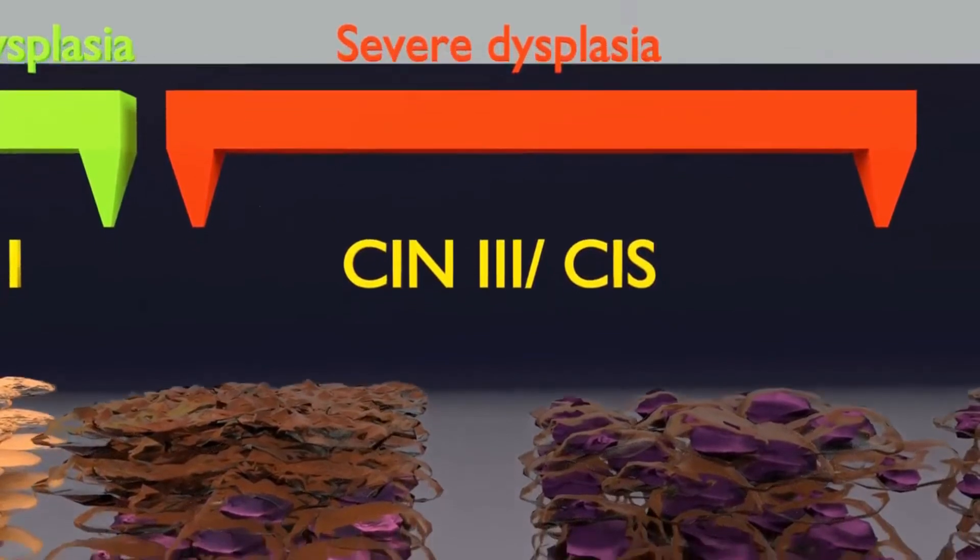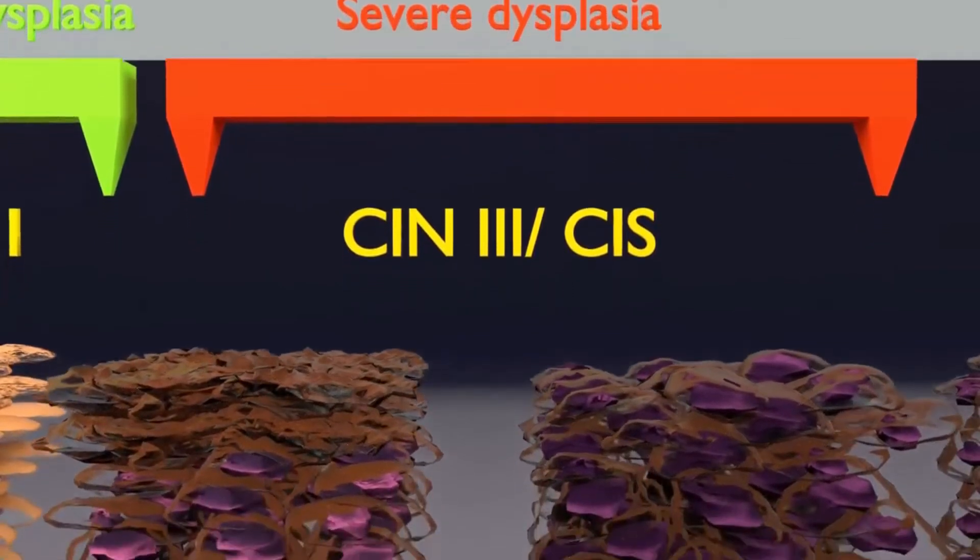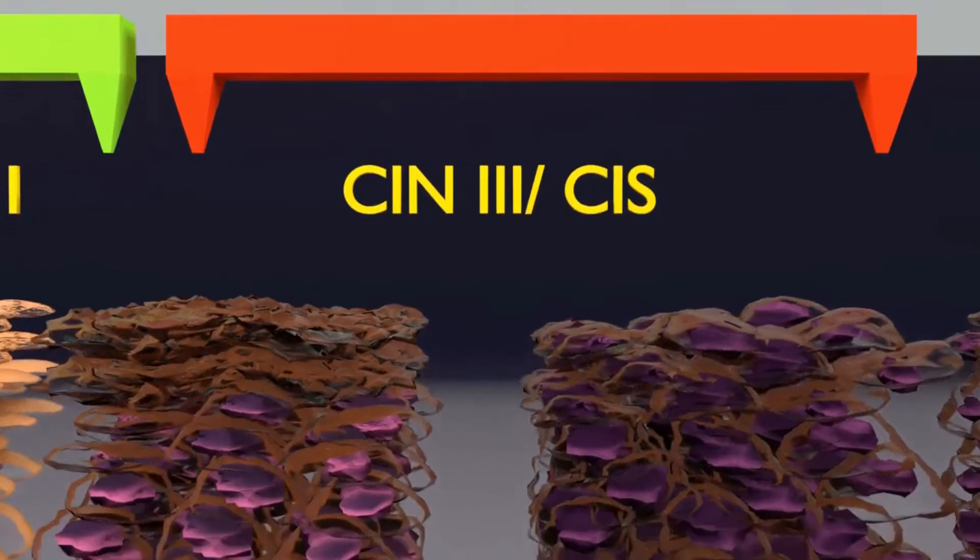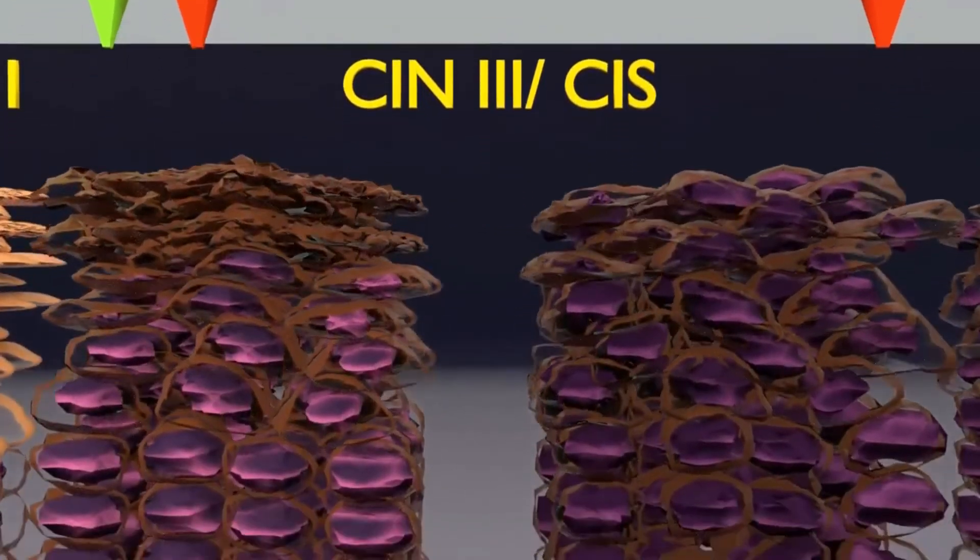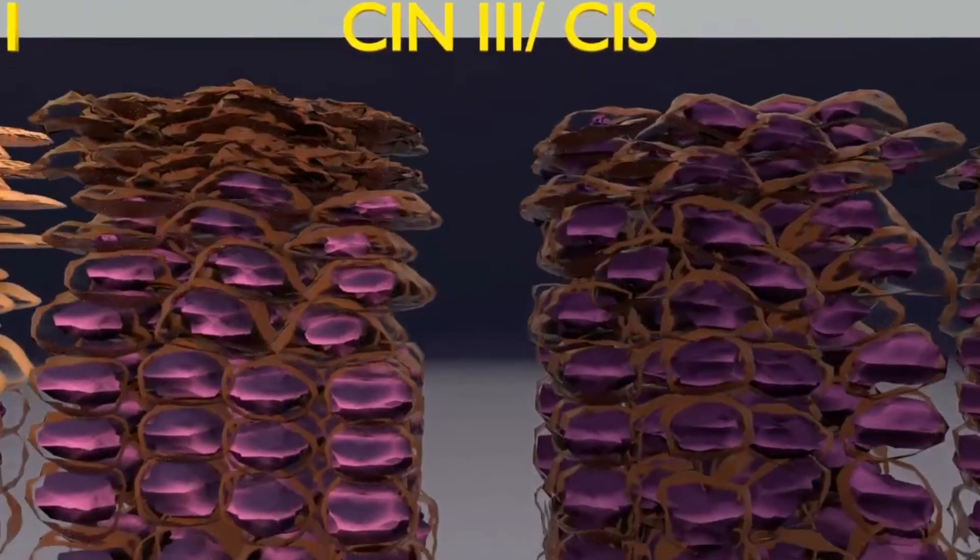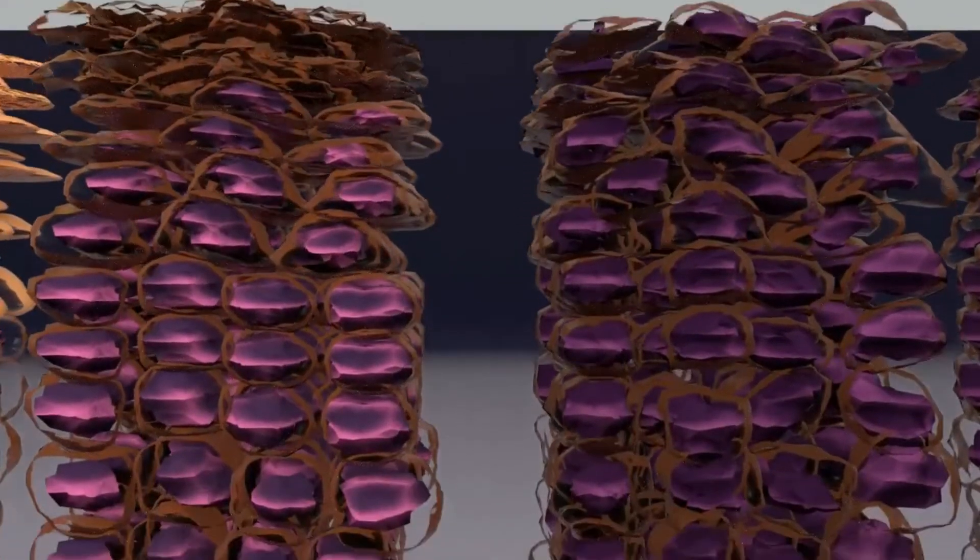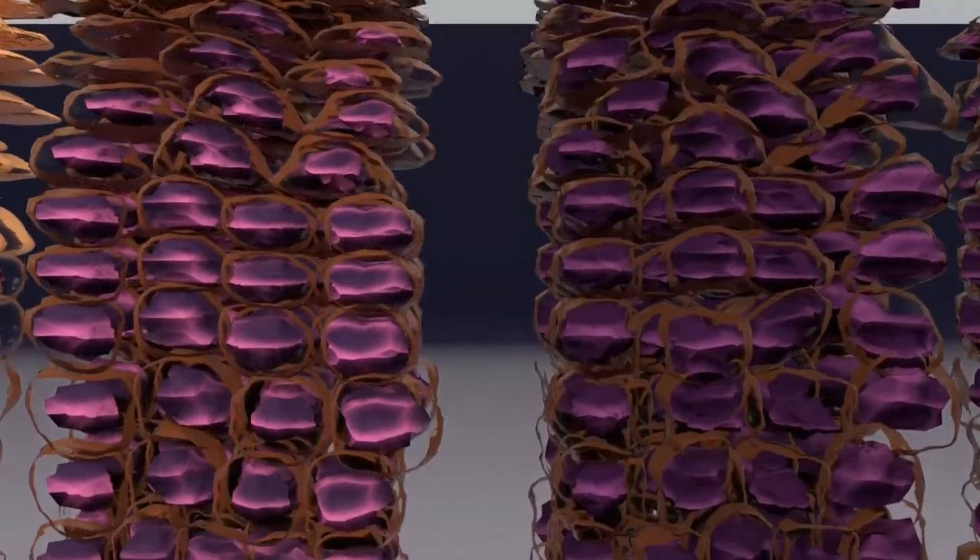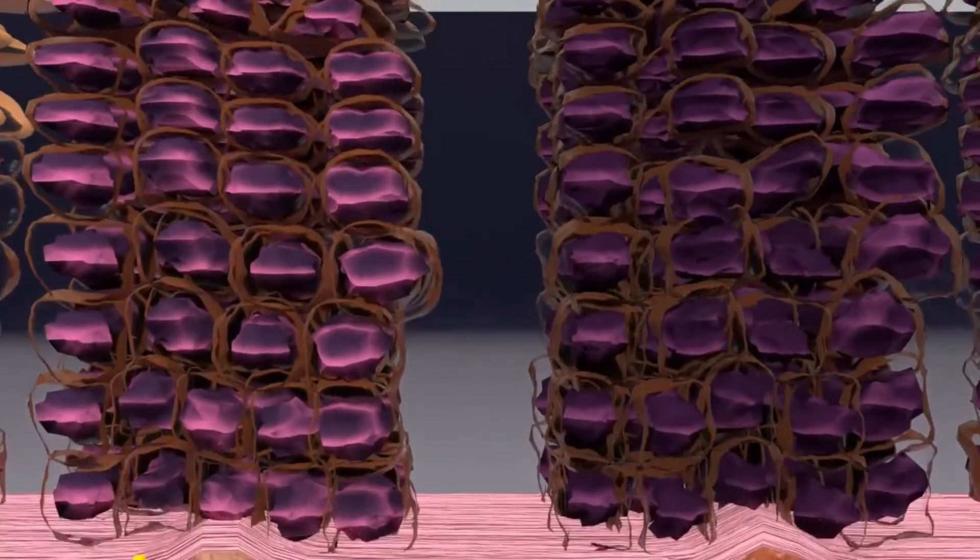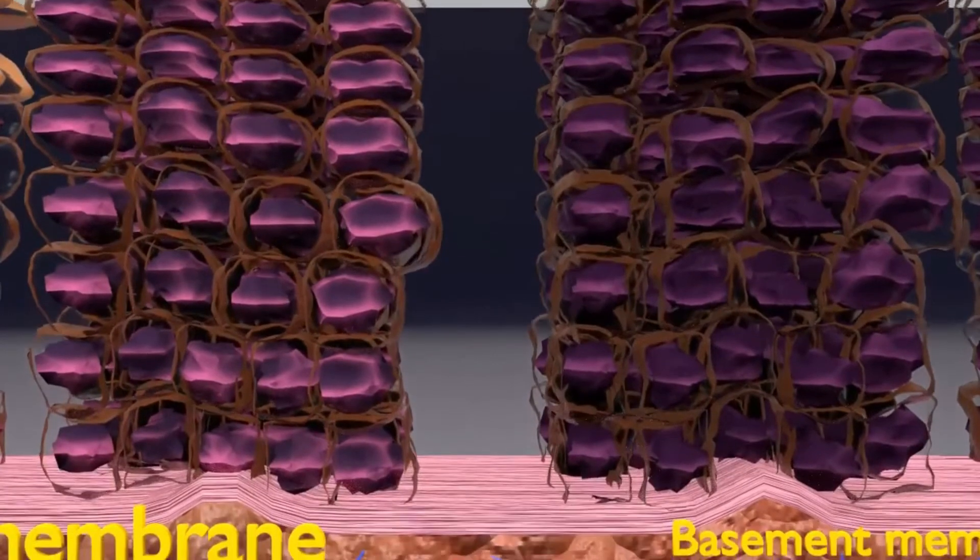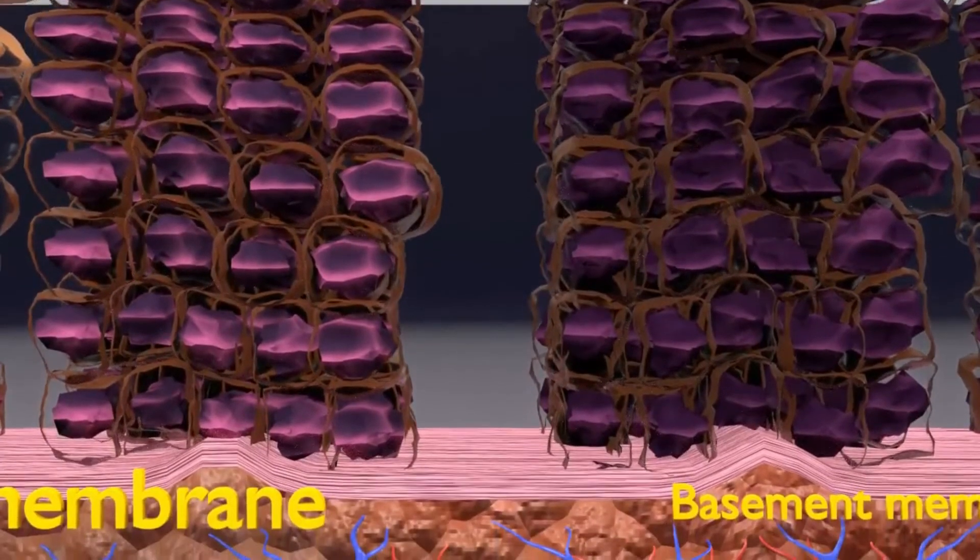Whereas in carcinoma in situ, the loss of maturation is more or less uniform across all the layers of the epithelium and the resemblance to squamous morphology is totally lost. Please observe that the deeper epithelium in both cases, i.e. CIN3 or CIS, is still limited by the basement membrane.